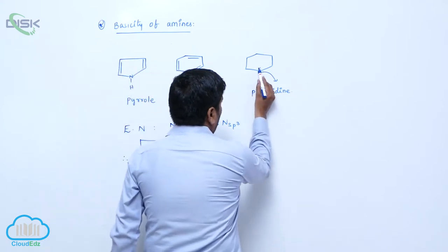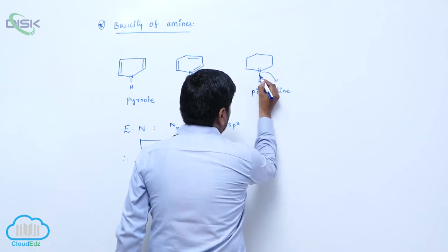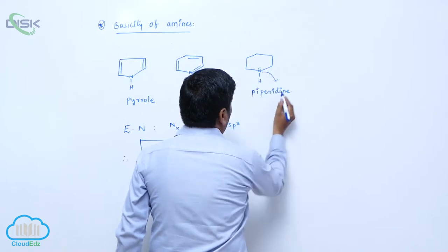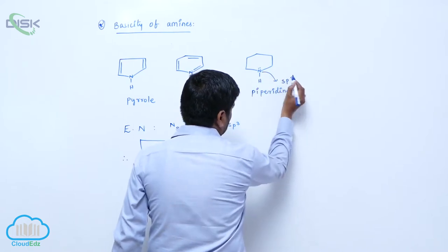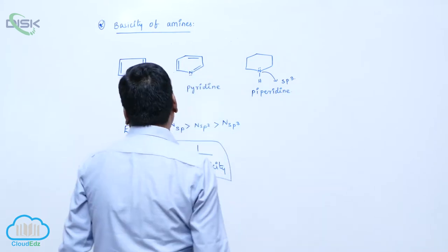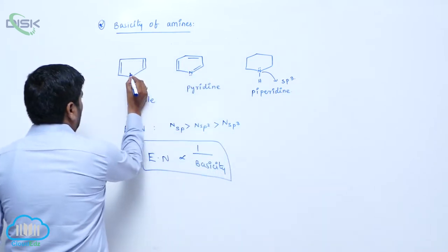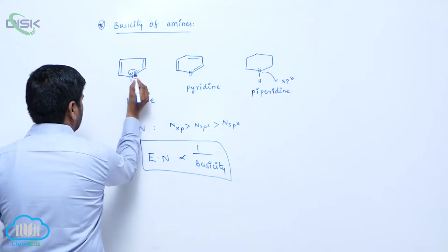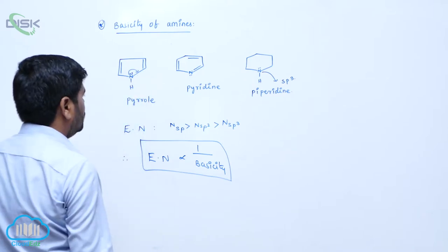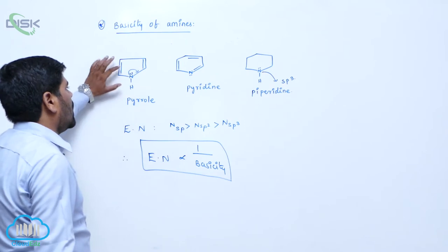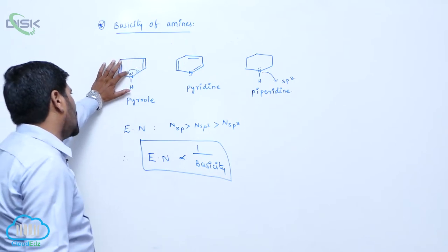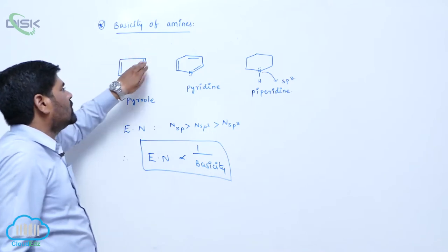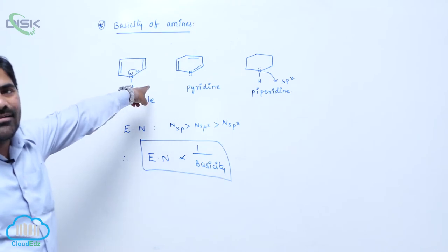Here, the nitrogen lone pair hybridization has three sigma bonds and one lone pair of electron, so it is Sp3 nitrogen. However, this nitrogen lone pair of electron is involved in delocalization. Due to delocalization of this lone pair, these four pi bonds and two non-bonding electrons — six electrons are delocalized around the ring — so aromatic character increases.